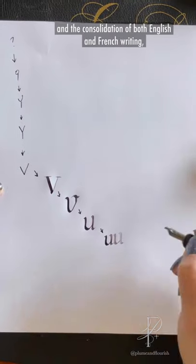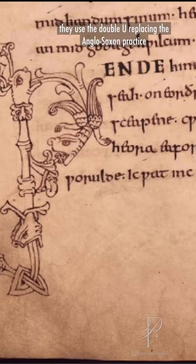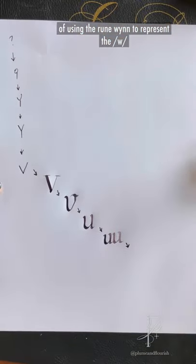After the Norman conquest and the consolidation of both English and French writing, they used the W, replacing the Anglo-Saxon practice of using the rune WEN to represent the W sound.